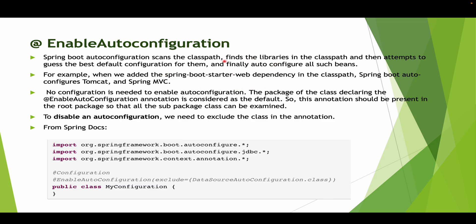For my spring-boot-starter-web dependency, the best default configuration is Tomcat and Spring MVC. Whether I am using it or not is secondary — Spring will automatically configure that for me. Do I need to enable anything? No, I don't need to enable anything because by default it is enabled. This @EnableAutoConfiguration annotation should be present in the root package — then only all the sub-package classes will be examined. If it is not present in the root package and is present in some other package, only that package will get auto-configured.